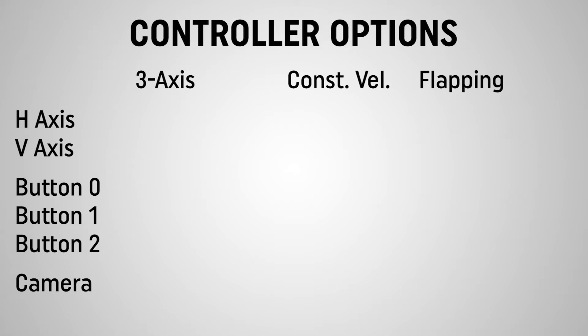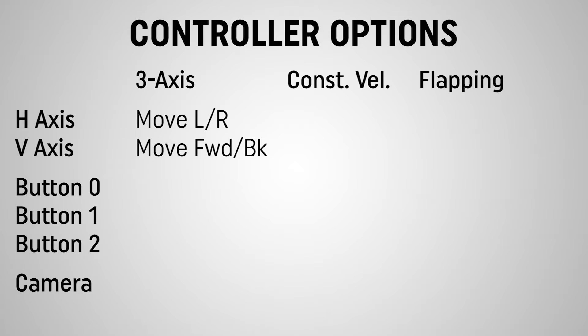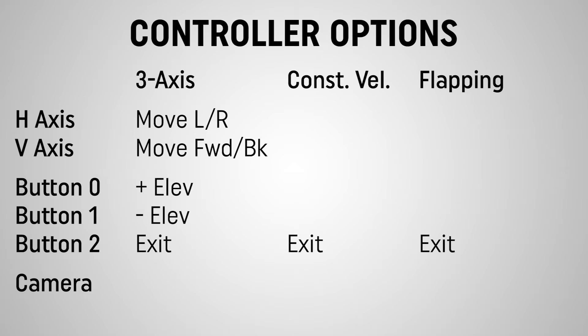The three-axis approach is very much like our walking controller on the ground, but with a third axis of motion added so we have complete control — able to stop on a dime and move wherever we want in all three axes. The horizontal axis controls left and right, the vertical axis controls forward and backward, and buttons zero and one control increasing and decreasing our elevation respectively. Button two will be responsible for exiting this controller and going back to the walking controller — and that applies to all three approaches.